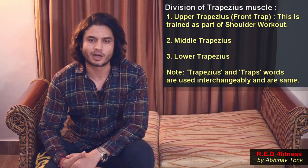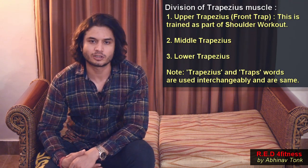Let's start with the anatomy of back muscles. The first muscle group is the traps muscles, or trapezius muscles. The trapezius muscle starts from the back of your skull and goes towards the center of your back. A lot of people think we train traps as part of shoulder workout, but the trap muscle trained in shoulder workouts is the upper trap or front trap — the portion visible from the front side.